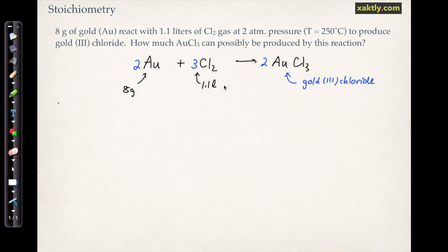And this problem says that we're reacting 8 grams of gold with 1.1 liters of volume at 2 atm of chlorine gas. So this is a limiting reactant problem.